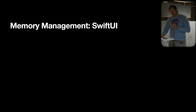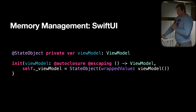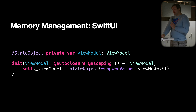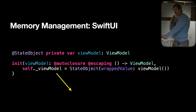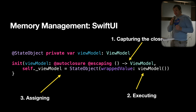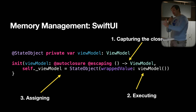The solution we found is to use an `@autoclosure @escaping` parameter. A closure is passed that creates the view model. You execute this closure to generate the first instance of the view model, then assign it to a `@StateObject` to manage its lifecycle tied to the screen. At the call site, because of the autoclosure, you just pass the view model instance directly — it gets captured and the closure is created for you. Three steps: capture the closure (escaping because it's stored after the function returns), execute it to generate the first view model instance, then assign it to `@StateObject`.